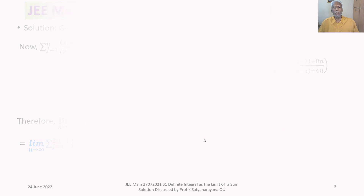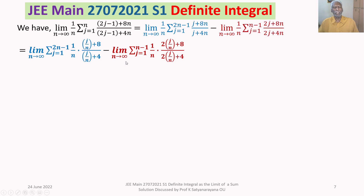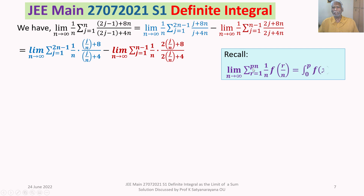Using the formula: limit n→∞ of sigma r=1 to pn (or pn−1) of (1/n) f(r/n) = integral from 0 to p of f(x) dx, we identify j/n as x and 1/n as dx. The lower limit is 0 (since 1/n → 0 as n→∞) and the upper limit for the first sum is 2 (since (2n−1)/n → 2 as n→∞). For the second sum the upper limit is 1.